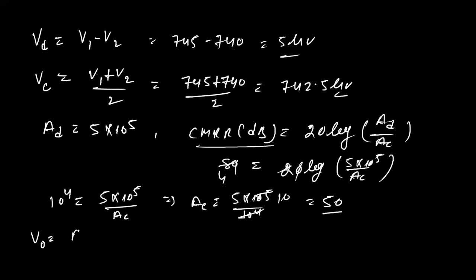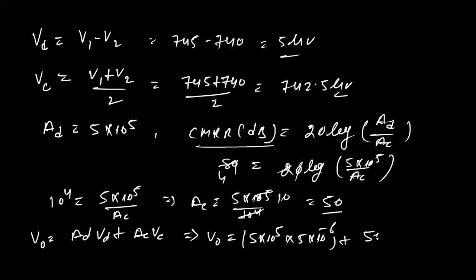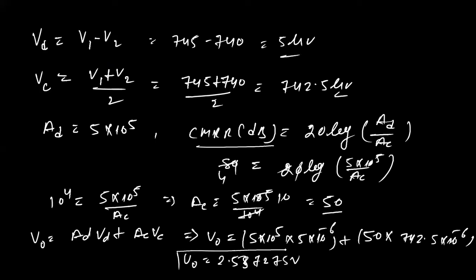Now applying the formula: V_output = A_d × V_d + A_c × V_c = (5 × 10^5)(5 × 10^−6) + (50)(742.5 × 10^−6). Calculating this gives V_output ≈ 2.537275 volts. This completes the first part — the output voltage.